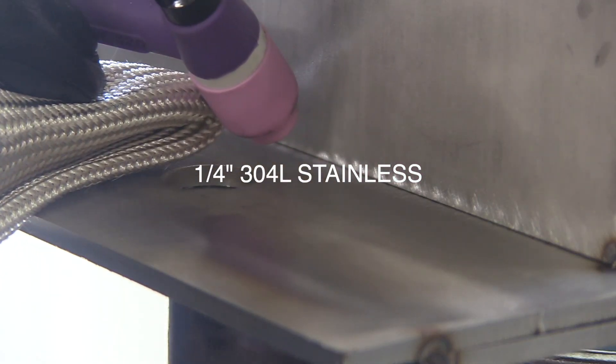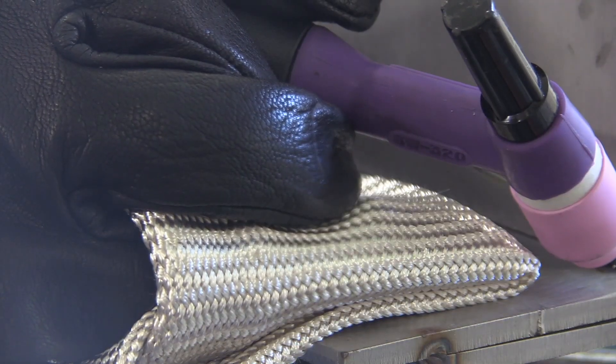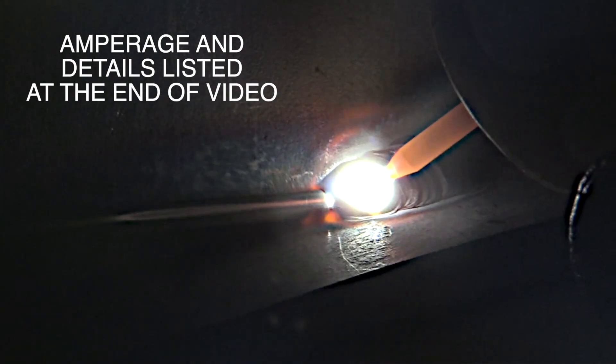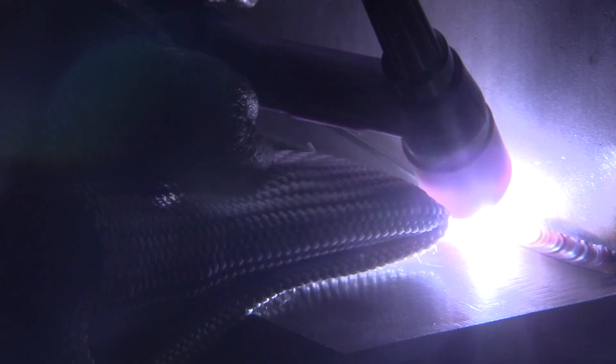For the first half of the joint I'm going to do a freehand technique using a TIG finger to glide along. For the second half I'll walk the cup. Both halves though, I'm going to use the lay wire technique where the wire is left in the puddle. And since this video is under six minutes long, I'll just list all the settings and details at the very end.